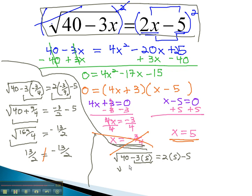3 times 5 is 15, and we get the square root of 40 minus 15 equals 2 times 5, or 10, minus 5. 40 minus 15 is 25, and 10 minus 5 is 5. Sure enough, the square root of 25 is 5, which is, in fact, equal to 5.